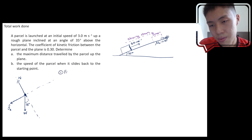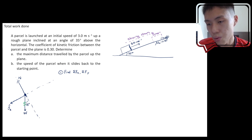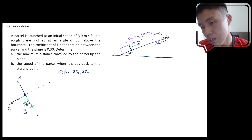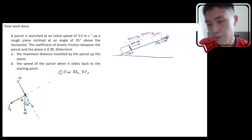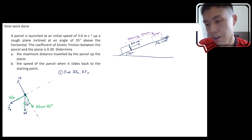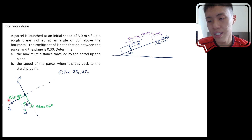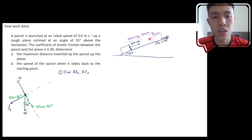Let's find sum of Fx and sum of Fy. The only force not on an axis is weight, so we resolve it into its components: the y-component is W·cos35° (near the y-axis) and the x-component is W·sin35°. For the x-axis, both forces — Fk and W·sin35° — point opposite the direction of motion, which is why the object slows down.